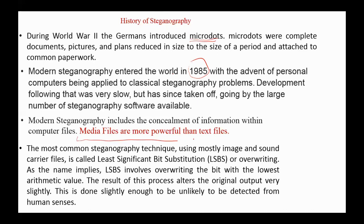Modern steganography includes the concealment of information within computer files. Media files are more powerful than text files. The most common steganography technique, using mostly image and sound carrier files, is called least significant bit substitution, or overwriting. As the name implies, least significant bit involves overwriting the bit with the lowest arithmetic value. The result alters the original output very slightly — enough that it is unlikely to be detected by human senses.